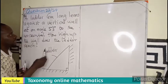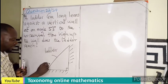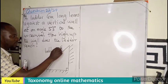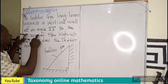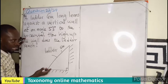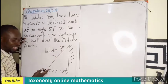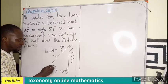They said the length of the ladder is 6 meters. So the ladder is 6 meters long. Then it leans against the wall at an angle of 53 to the horizontal. This is the horizontal. The ladder makes an angle with the horizontal, and that will be our 53 degrees.